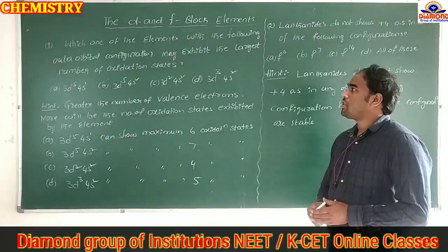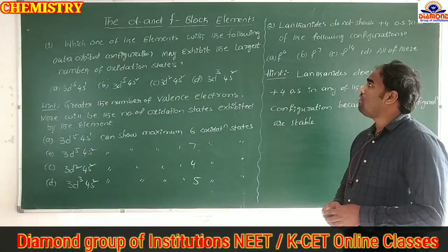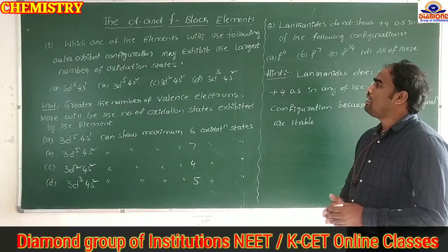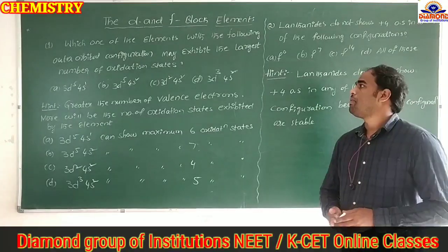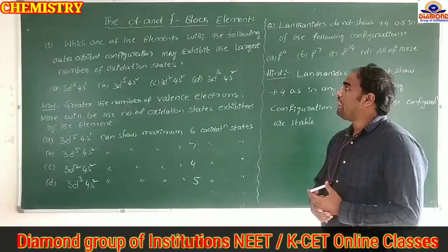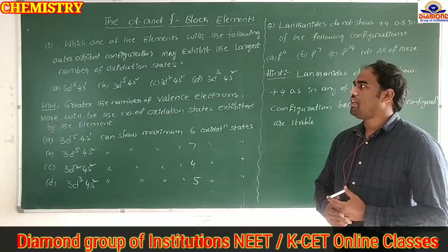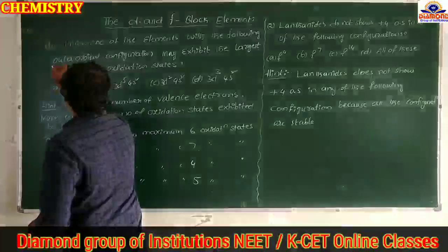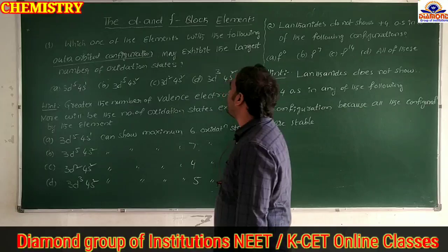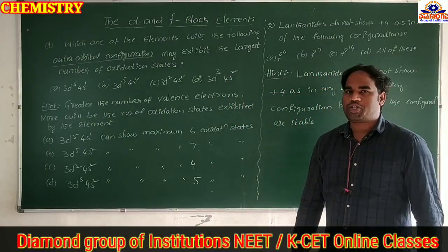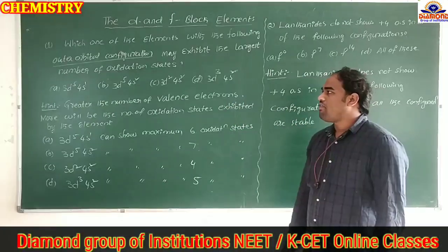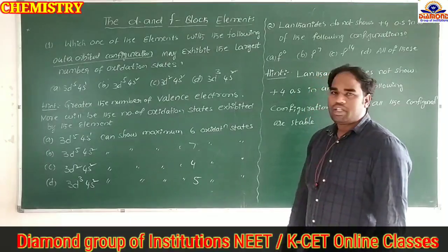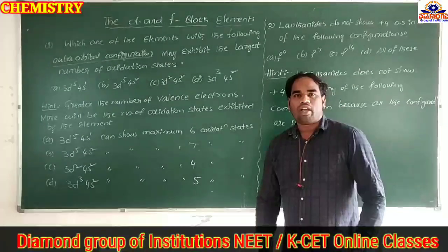Question 1: Which one of the elements with the following outer orbital configuration may exhibit the largest number of oxidation states? The options are: A) 3d⁵4s¹, B) 3d⁵4s², C) 3d²4s², D) 3d³4s².